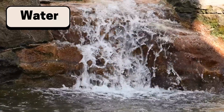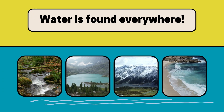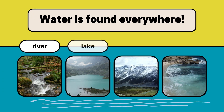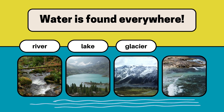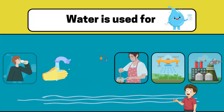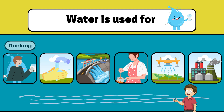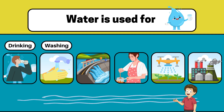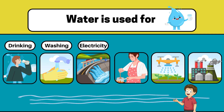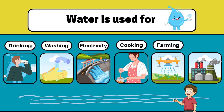Let's start with water. Where does our water come from? Places like rivers, lakes, glaciers and oceans are the sources of water. Water is used for drinking, washing, to make electricity, for cooking, also in farms to grow plants, and even in factories for making stuff.